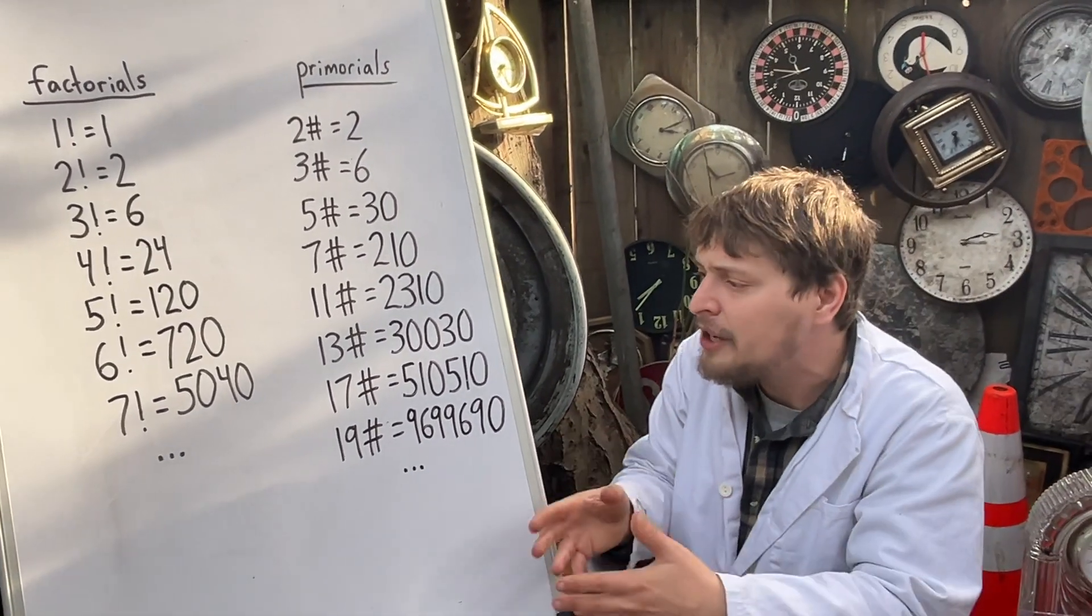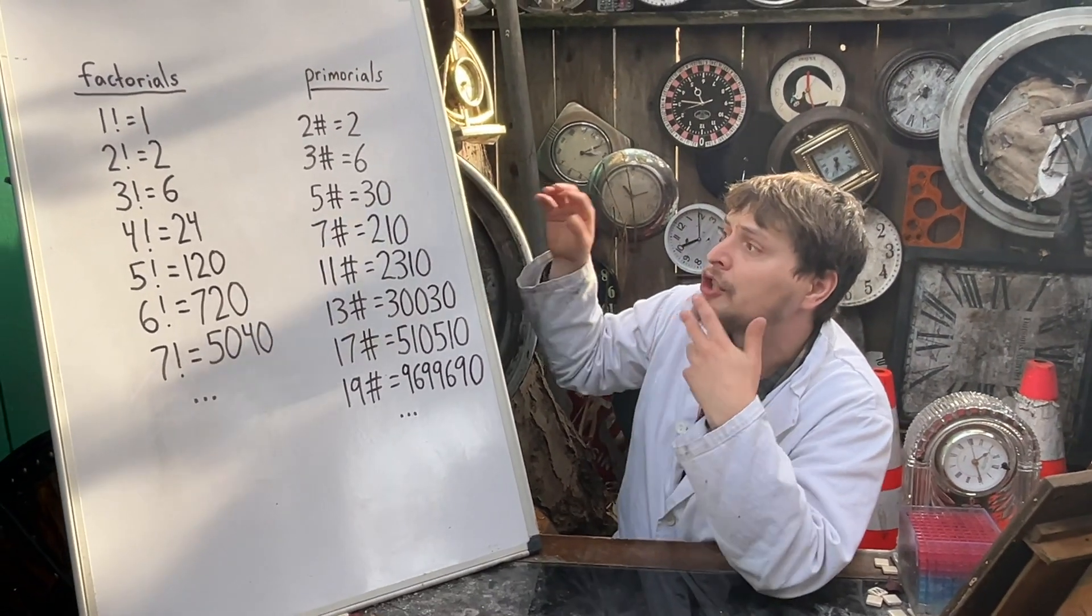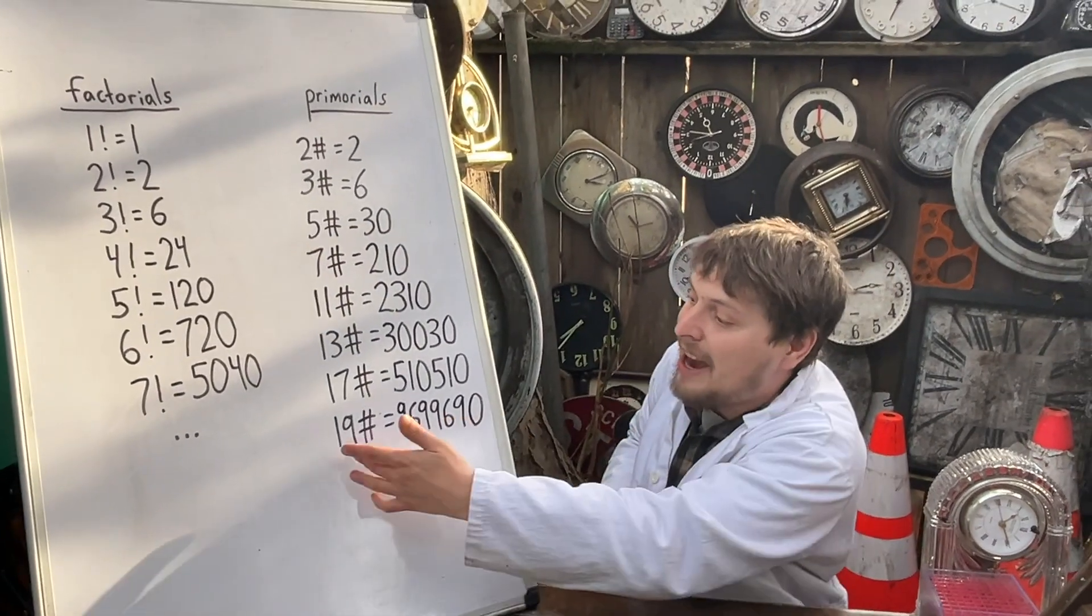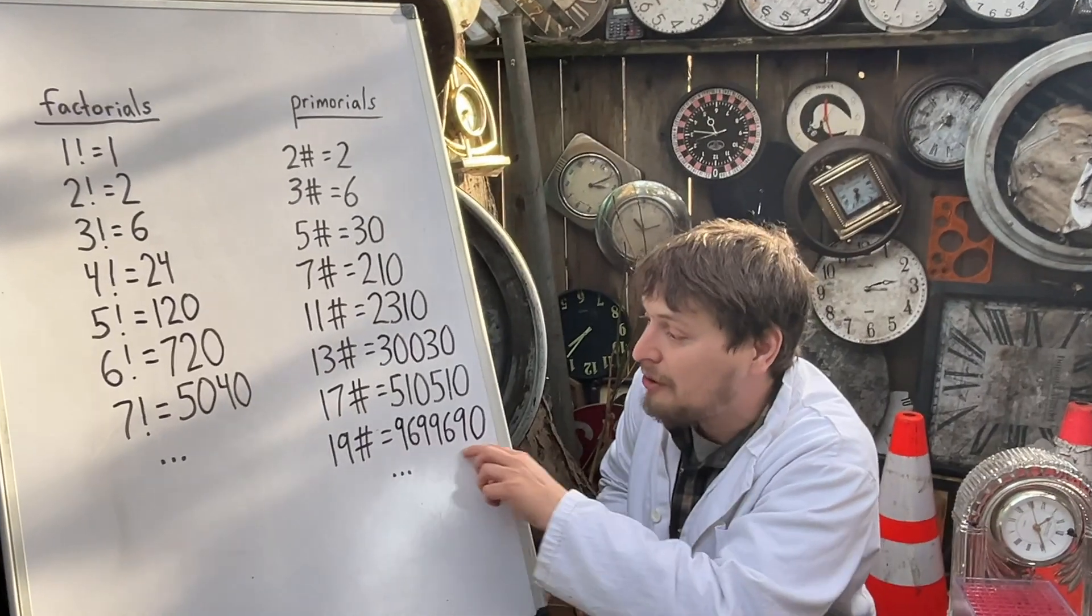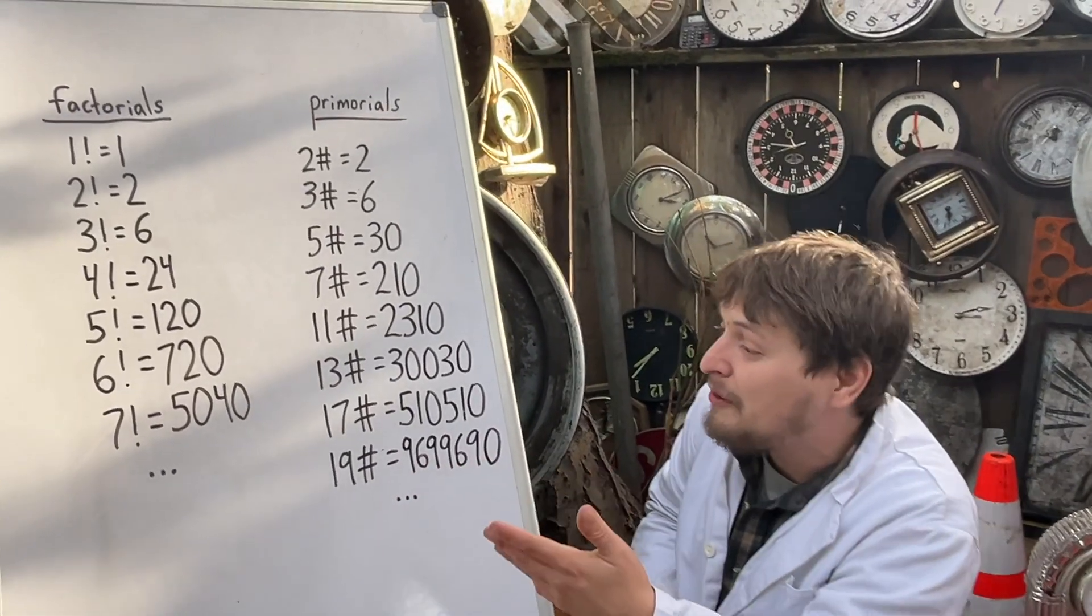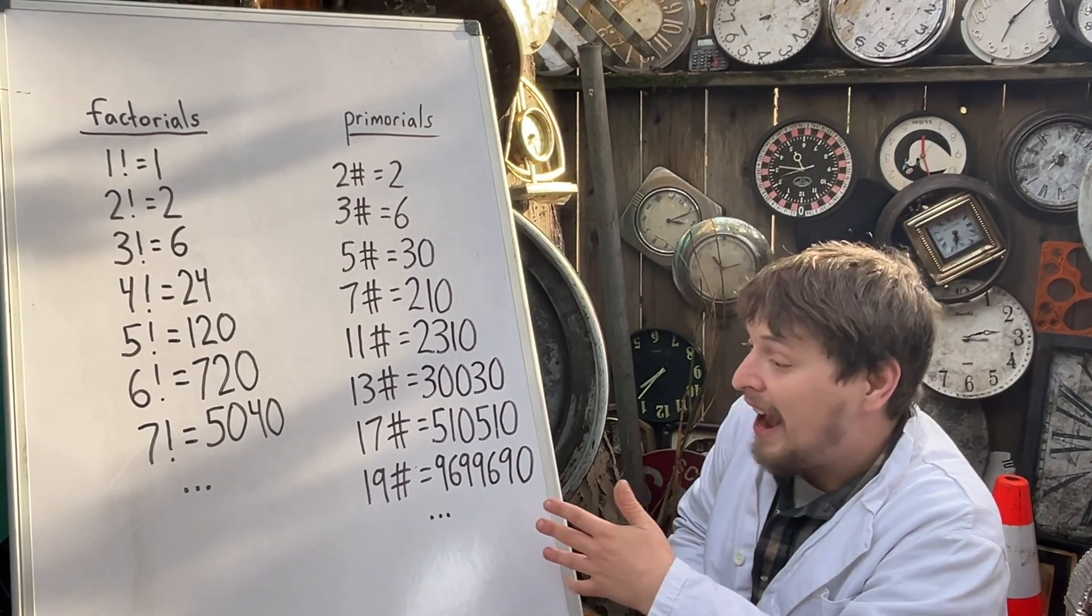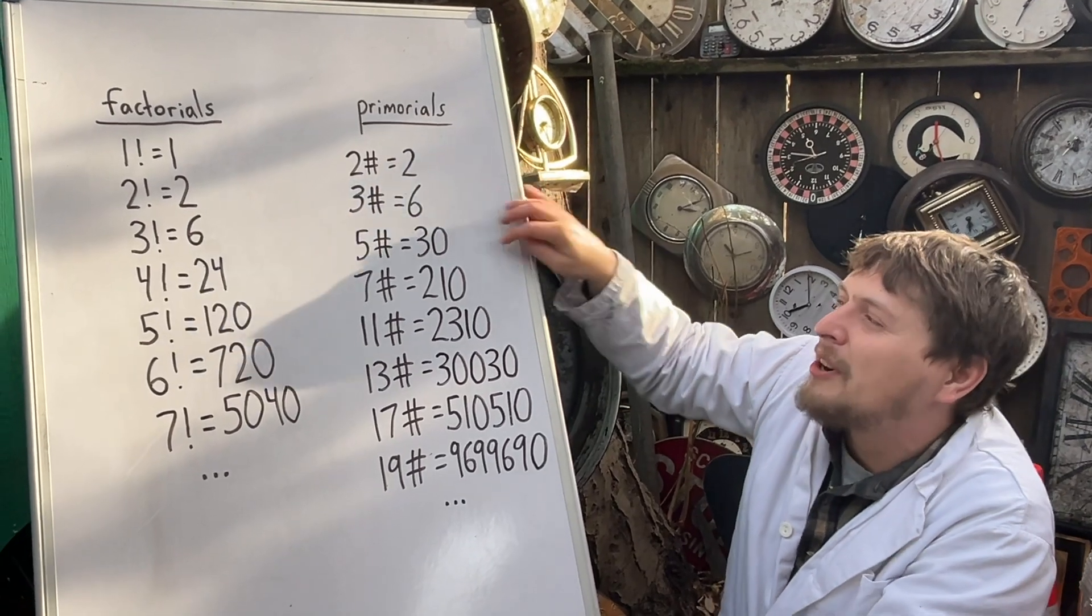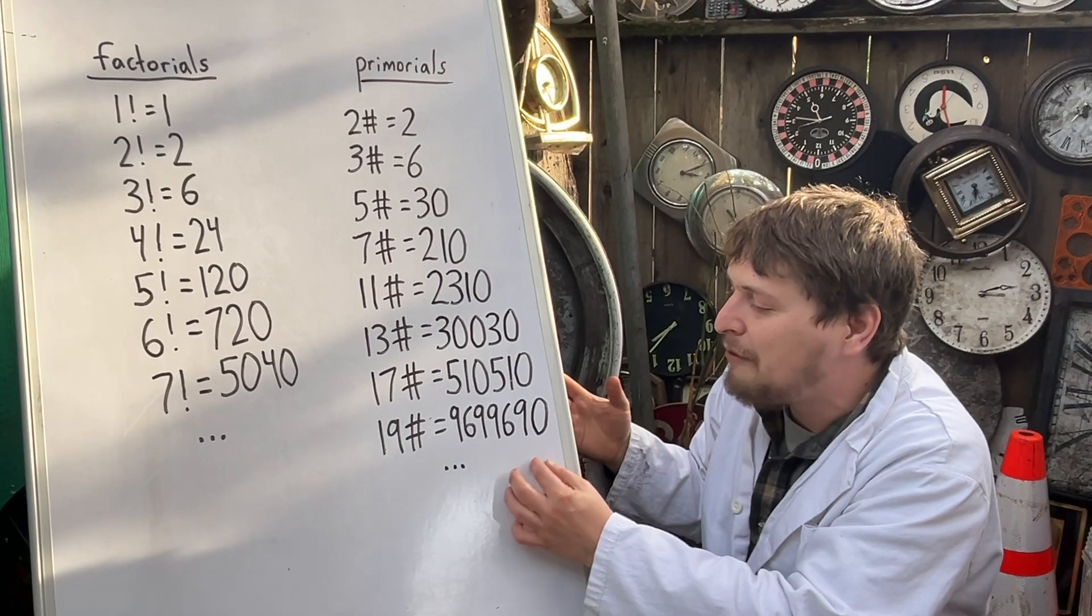In fact, the prime factorization of any further primorial would have every prime just to the first power up through whatever point that primorial was. For example, this prime factorized would be all of the primes up through 19 each to the first power, and none of them would get a second power on one of these primes.